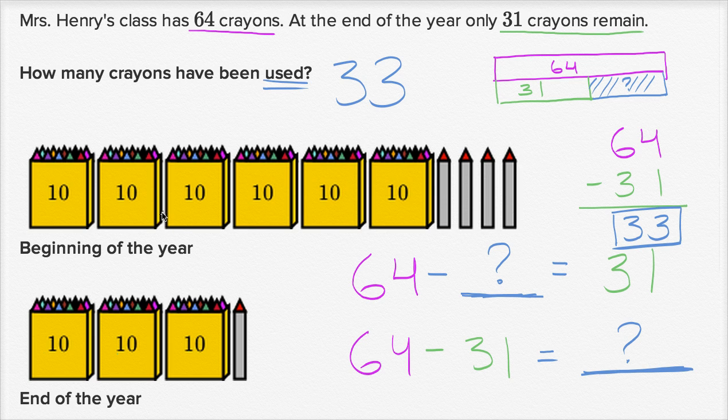Now since they made this neat picture for us, we actually could have just used the picture. How would we have done that? Well this is what they started with. This is the 64. Six tens. One, two, three, four, five, six tens. And one, two, three, four ones. So 64. And they end up with 31.